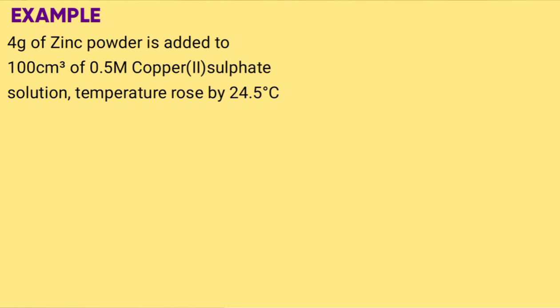Example: 4 grams of zinc powder is added to 100 cm³ of 0.5 M copper(II) sulphate solution. Temperature rose by 24.5°C. Calculate the molar heat of displacement of copper ions.